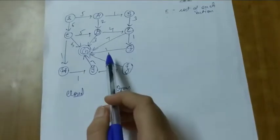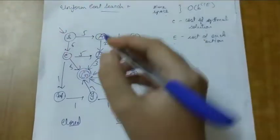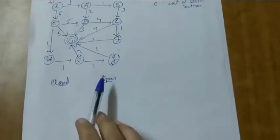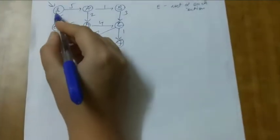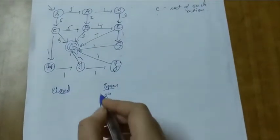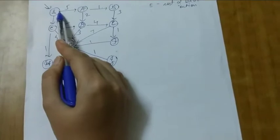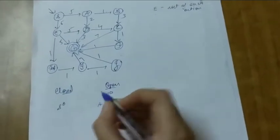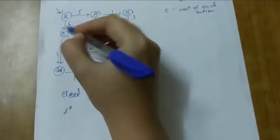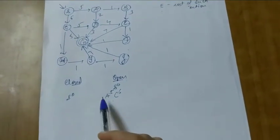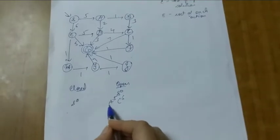Let's consider a graph where S is the start node and G is the goal node. The algorithm works by maintaining two lists: closed and open. First, the cost of source S is always zero, so copy it to the closed list. From S we can move either to A or C, which cost 5 and 6 respectively. We must select the minimum value and move it to the closed list — that is A with cost 5.